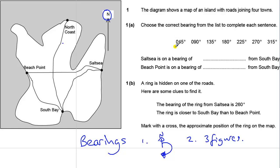So we've got that little clue here. We've got some examples to help us: 045, 090, 135. All these have three figures. All bearings have three figures. Now the question we've got to do is to work out the bearing of Saltcea, which is on a bearing of something from South Bay. Now the word 'from' is very important in bearings questions. It tells you where you're starting from.